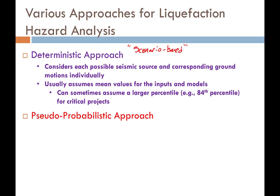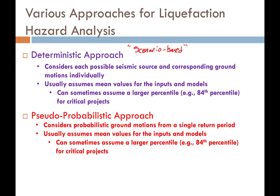A second type of approach, much more common in engineering practice today, is what has been termed the pseudo-probabilistic approach. This approach considers probabilistic ground motions, but only from a single return period — so we're taking probabilistic ground motions and analyzing them in a deterministic manner. It's almost like taking a screw, putting it up to a wall, and pounding it in with a hammer. That's what the pseudo-probabilistic approach is.